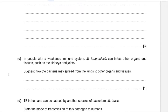Part C: In people with a weakened immune system, M. tuberculosis can affect other organs such as the kidneys and joints. State how the bacteria may spread from the lungs to other organs. The bacteria may spread using the person's own transport systems — the lymphatic system and the circulatory system — using lymph or blood plasma. If you write blood plasma, make sure you do not write red blood cells, because bacteria do not have binding sites on red blood cells.